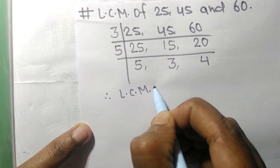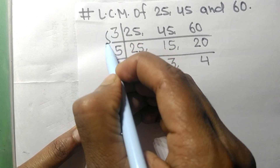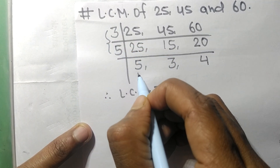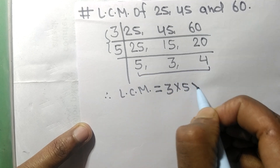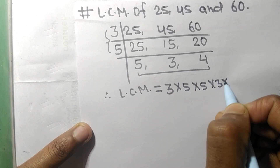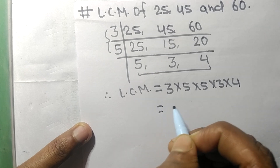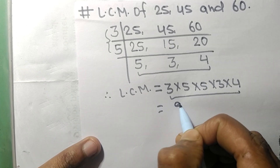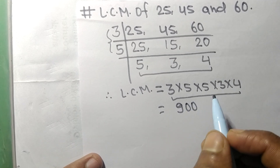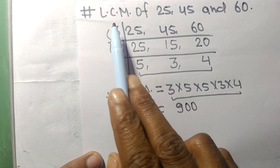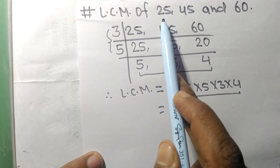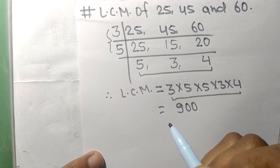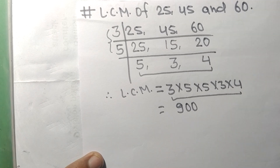Therefore the LCM is calculated: from one side it is 3 times 5, and from the other side it is 5 times 3 times 4. By multiplying all these numbers we get 900. So 900 is the LCM of 25, 45, and 60. Thanks for watching.